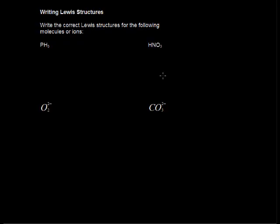In this video, I'll walk through some examples of writing Lewis structures for covalently bonded compounds. Our first one is PH₃, and we start by finding the number of valence electrons.